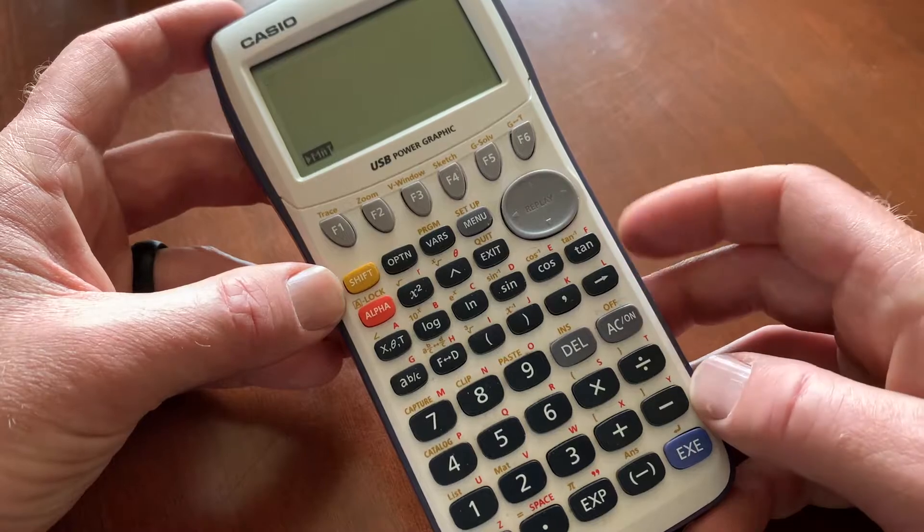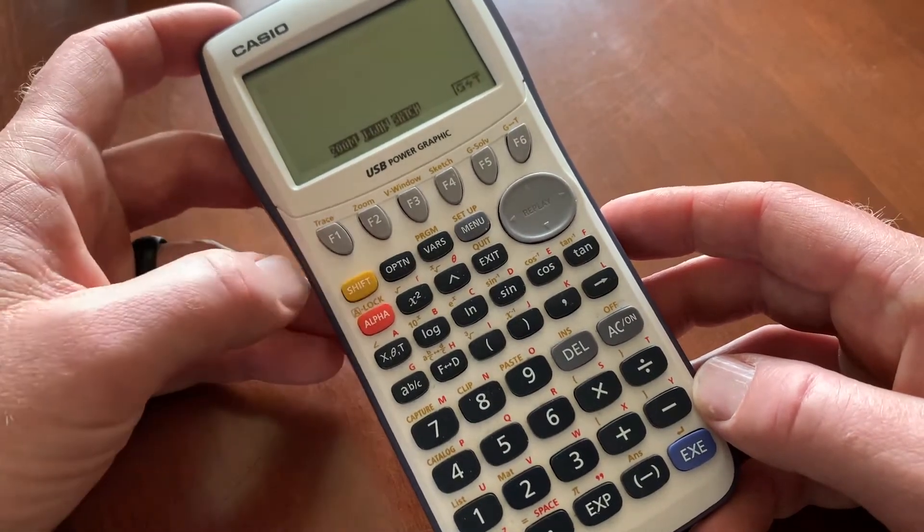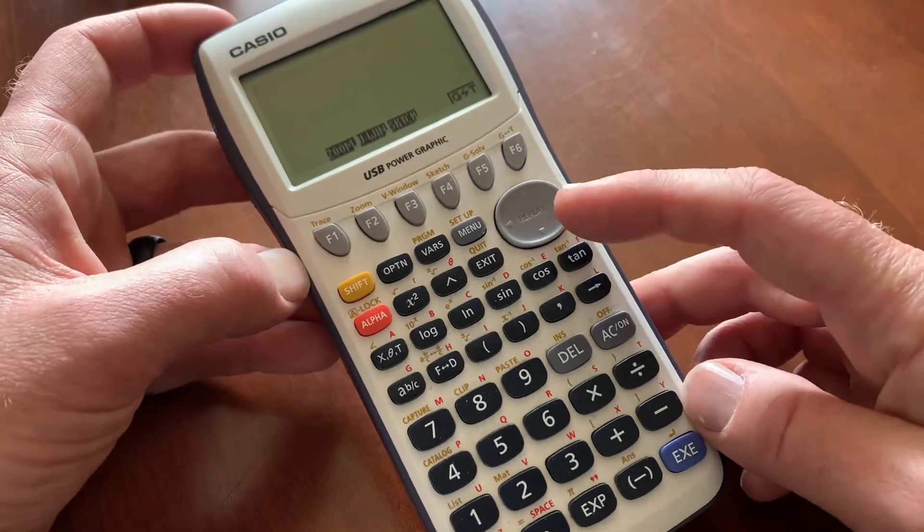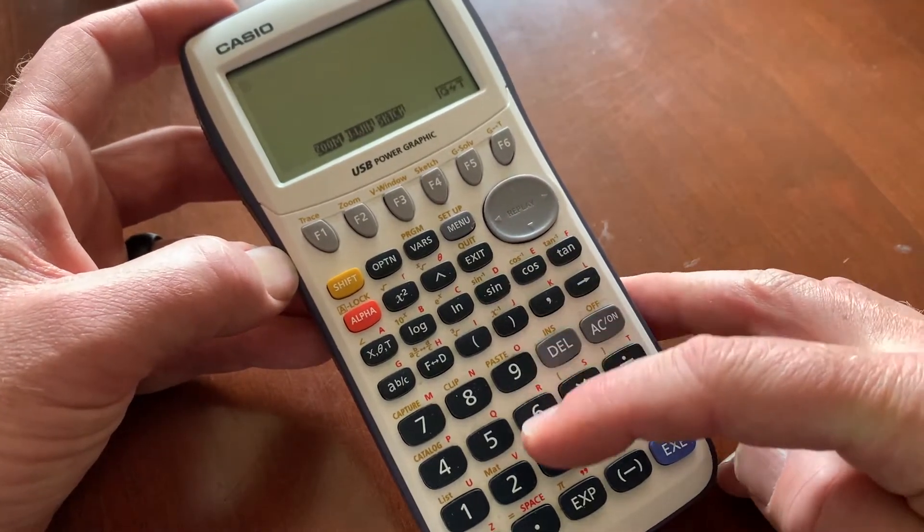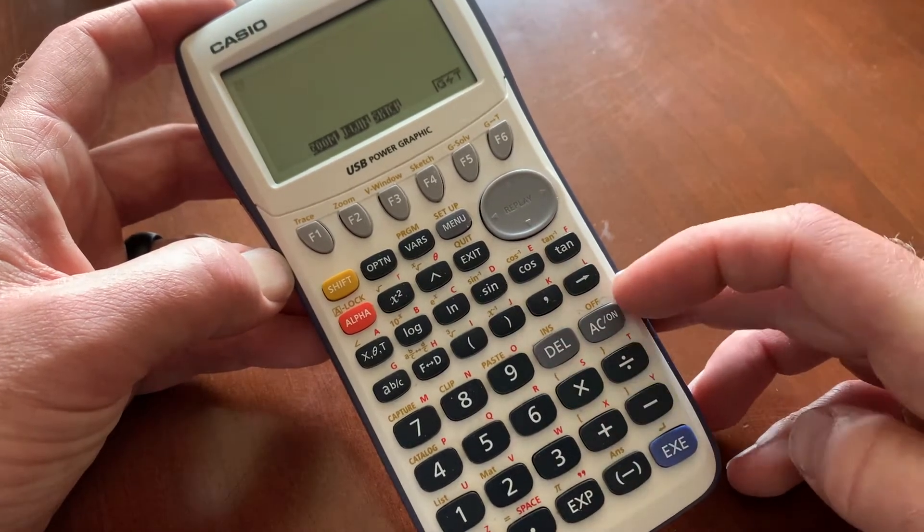So for us to turn this off, basically all we need to do is hit that shift button once. That's going to move us into that secondary mode. You can see you have all of these button options now, including that little off.